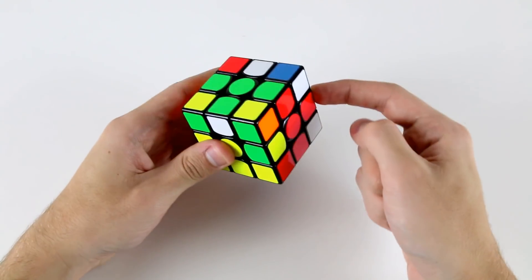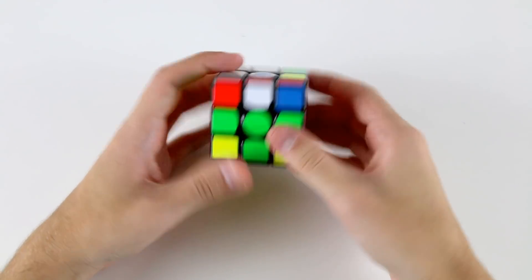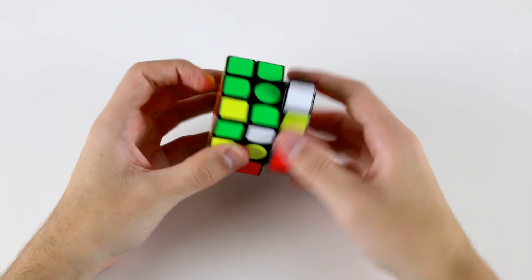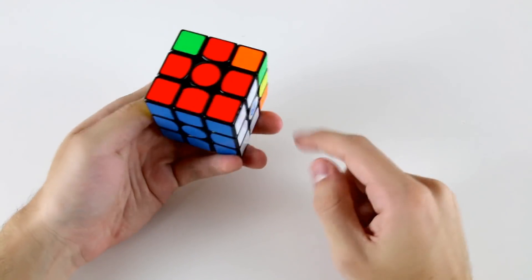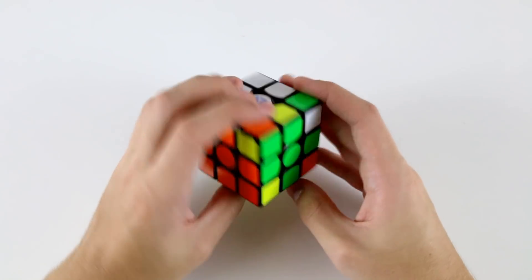One fancy way I can do these last two F2L pairs is insert this edge into the back slot here. Noticing that I have this corner solved in this front slot, if I insert this edge into the back slot here, then do a D', insert this formed pair there, then I can do that. That's kind of multi-slotting keyhole. That was pretty fancy, that was fun.